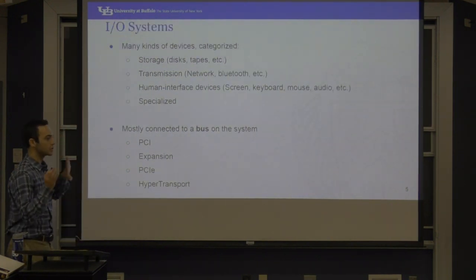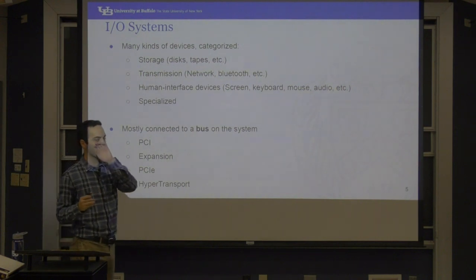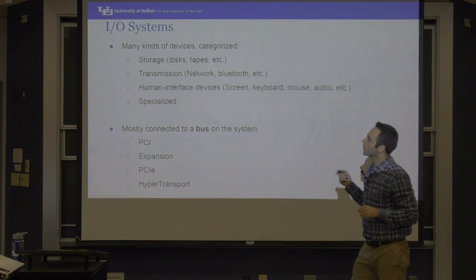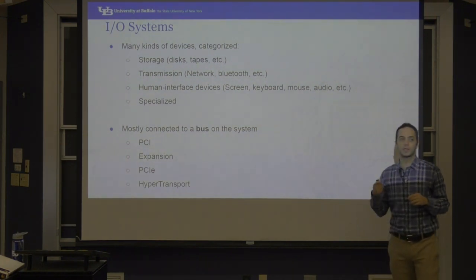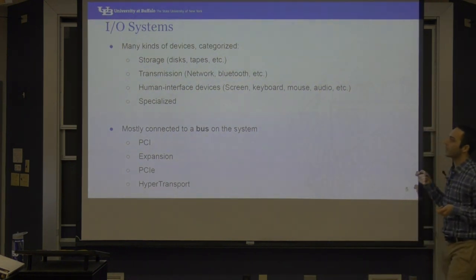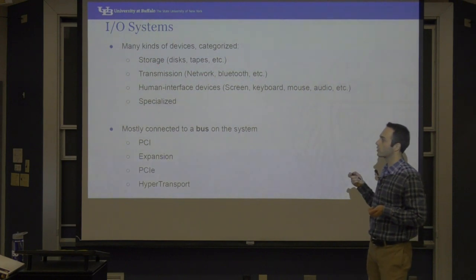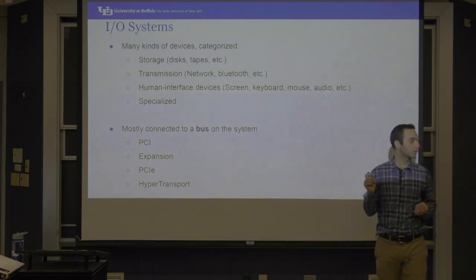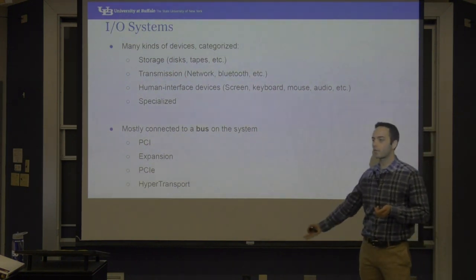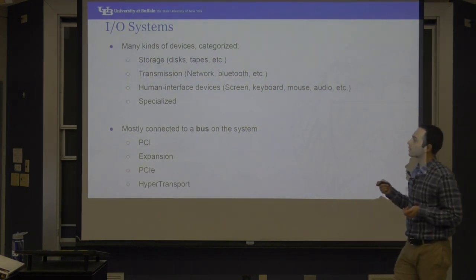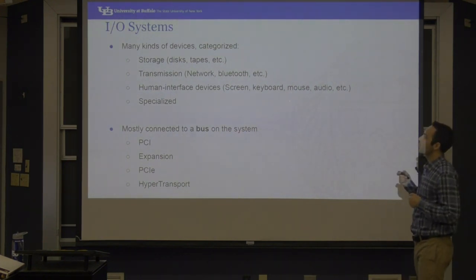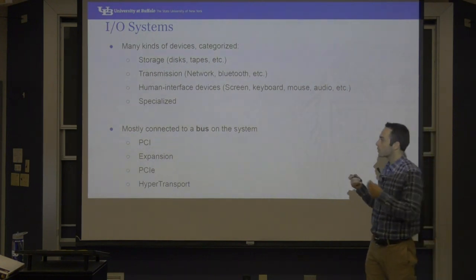For I/O systems, this is just a quick introduction — this is not an actual embedded systems class. There are many I/O devices on your computer besides your CPU and memory. They can be used for storage, transmission such as network, Bluetooth, Ethernet, Wi-Fi, and human interface devices like screen, keyboard, mouse, audio, or specialized controllers.